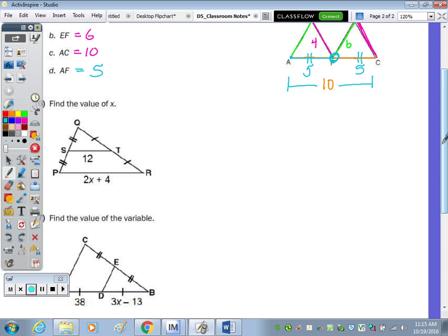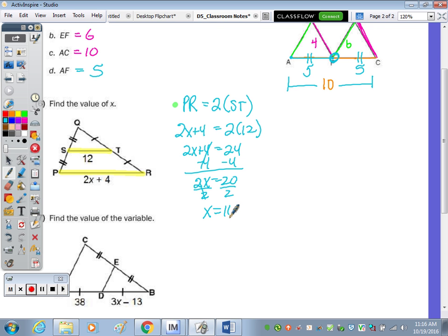And number 6, find the value of X. Well, we have a midsegment, so it's good to highlight that, and you can say that the longer is double the shorter, or you can use half. In this case, I would say that PR, the longer, is double ST with the algebra, so you can avoid working with the half. So, PR, which is 2X plus 4, is equal to 2 times 12. So, 2X plus 4 is 24, and then subtract the 4, divide by 2, and we get X equals 10.